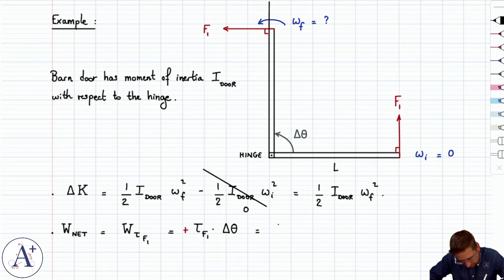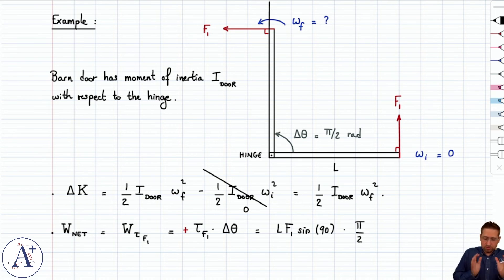where torque of F1 is going to be length L, F1 sine of 90. We're computing torque with respect to the hinge, multiplied by delta theta, which is actually pi over 2, because the door just rotates through pi over 2 radians. Now careful that you need to use radians. It's kind of confusing because I plugged in degrees into sine here, sine of 90, but delta theta has to be in radians.